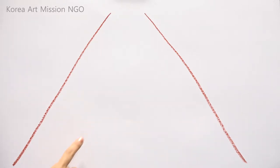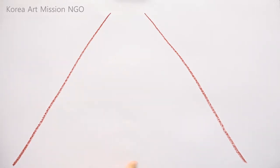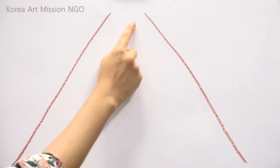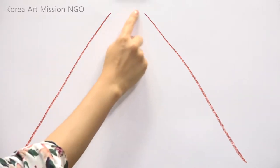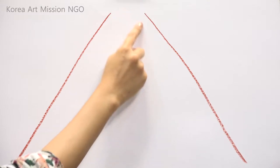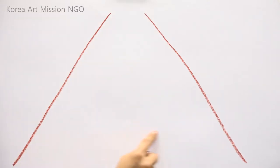Now, if we assume that we're standing here, the road is ahead of us. The farther away the road is, the narrower the road looks and the broader it is in the front. So, I will continue to draw this.